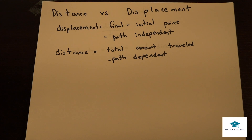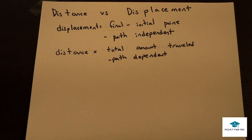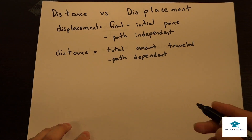The first thing we're going to look at is the distinction between distance versus displacement. It's a slight distinction but it is definitely important to know. Displacement is the final minus the initial point and it's path independent, versus distance which is the total amount traveled and it's path dependent.